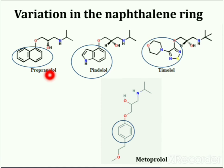Here you can see the compounds generated from variation in the naphthalene ring system. Propranolol contains a naphthalene ring system, while in the case of pindolol, timolol, and metoprolol there are various other heteroaromatic ring systems. All these compounds are beta blockers.